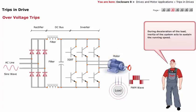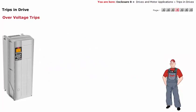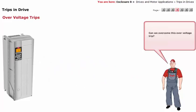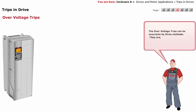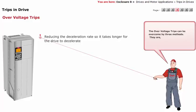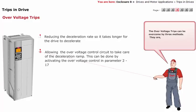The over-voltage trips can be overcome by three methods. First, reducing the deceleration rate so it takes longer for the drive to decelerate. Second, allowing the over-voltage control circuit to take care of the deceleration ramp — this can be done by activating the over-voltage control in parameter 2-17. Third, installing a brake resistor on the unit across the DC bus.